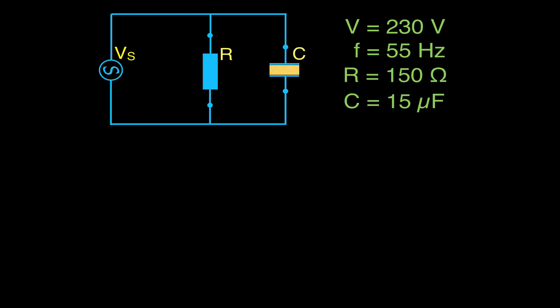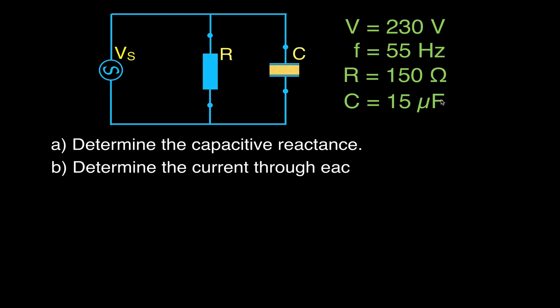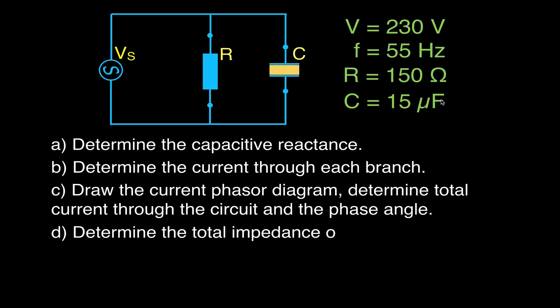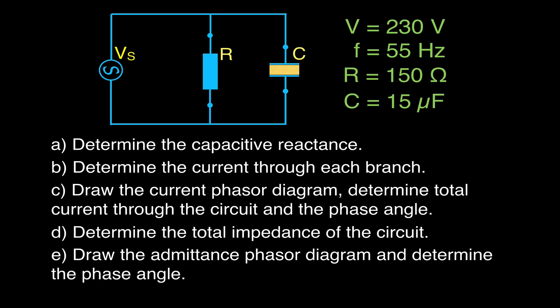This is an example problem for RC parallel circuits with an alternating voltage source of 230 volts. The frequency of that source is 55 Hz, the resistance of the resistor is 150 ohms, and the capacitance of the capacitor is 15 microfarads. We're going to determine the capacitive reactance, get the current through each branch, draw the current phasor diagram, get the phase angle and the total current, get the impedance, and use our admittance triangle to get the admittance and phase angle that way.